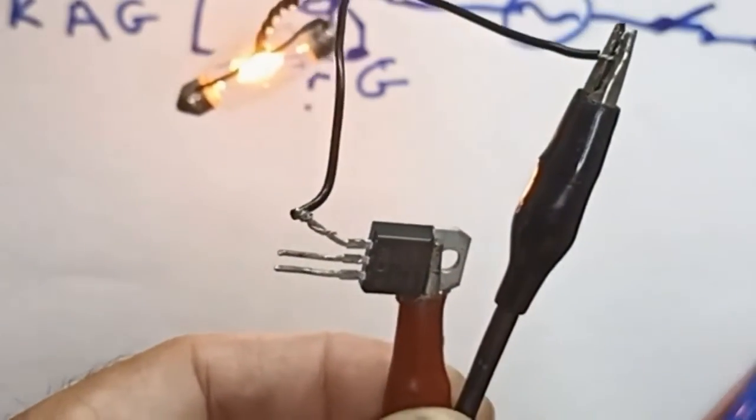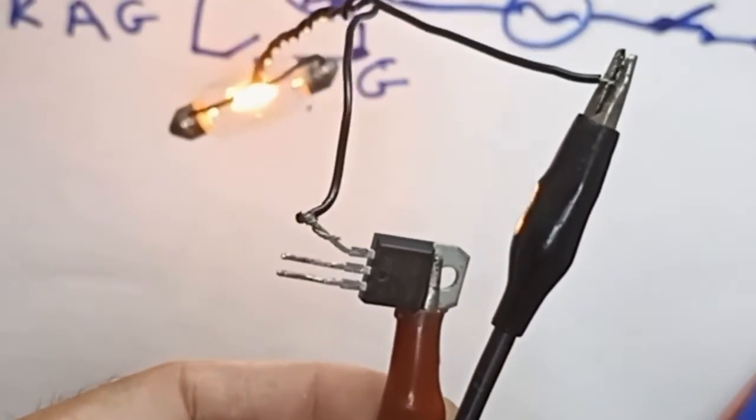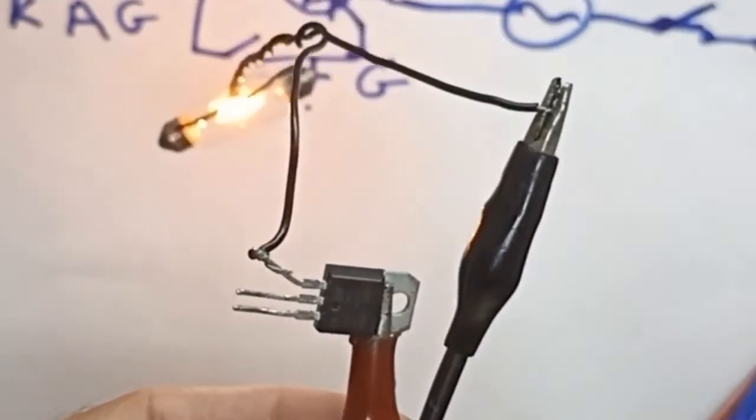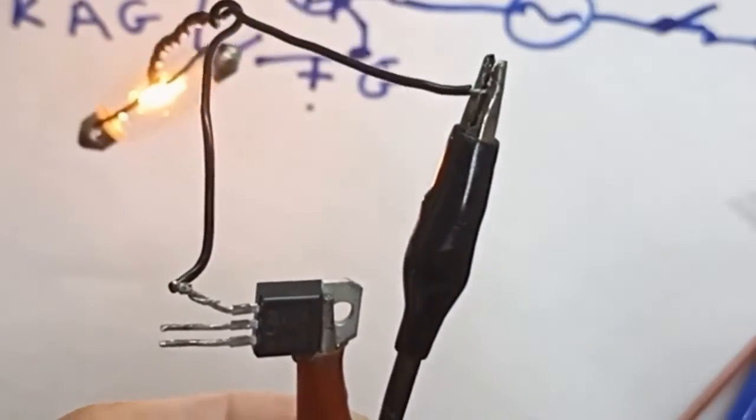So now I will short-circuit the anode with the gate. The little lamp turned on. You see, I have now removed the short-circuit. I have not short-circuited it. And you see that the little lamp has remained lit. The thyristor is now stuck in the conductive state. So it's correct. That's how we have checked it.